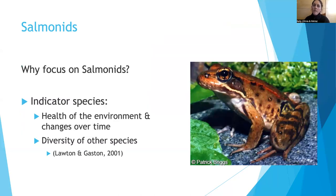So why focus on salmonids? Salmonids are an indicator species for other threatened and endangered species. An indicator species can be used to understand the overall health of the environment for many species and as a proxy for the diversity of other species living in the ecosystem.